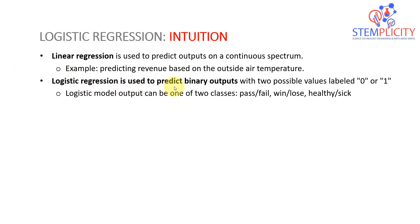Logistic regression is used to predict binary outputs. We have two classes: class zero or class one. Examples include going into an exam with two likely outcomes — either pass or fail. Or playing the lottery — either you win or you lose. Or a yearly body assessment — either you're healthy or sick. Just two possible values, either zero or one. That's the overall idea when we apply logistic regression to perform classification.